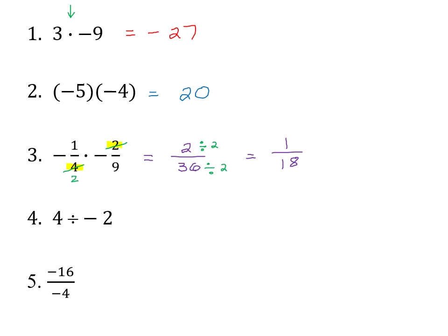On number four, we're dividing. You can use the division symbol or write it as a fraction. Four divided by negative two — opposite signs — gives negative two. On number five, negative sixteen divided by negative four — both negative — so the negatives go away giving a positive answer: sixteen divided by four is four.